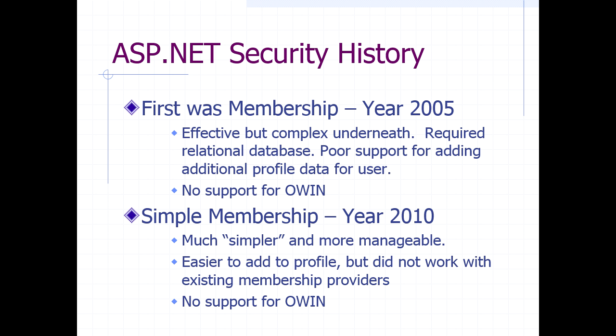Another limitation is it doesn't support OWIN, the open-source identification system that is the heart and soul of most OAuth implementations — the kind that lets you log into one service with your account from another. Simple Membership, which is what we used, was definitely a great simplification, down to like five or six tables — nice, easy, simple. But it didn't have much backwards compatibility with the custom providers from the old system, and it didn't support OWIN either.